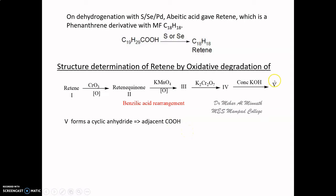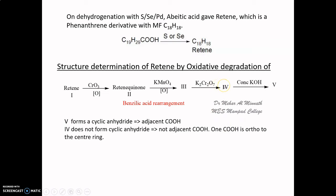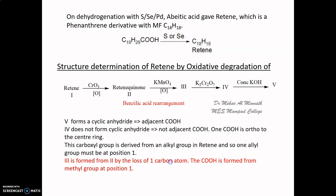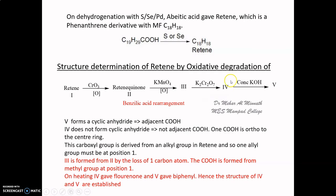Compound 5 formed a cyclic anhydride, meaning it has two adjacent carboxyl groups. Compound 4 does not form a cyclic anhydride, so its two COOH groups are not adjacent. One COOH was found to be ortho to the center ring, derived from an alkyl group in retene, so one alkyl group must be at position 1. Compound 3 is formed from compound 2 by loss of one carbon atom, so the COOH must have come from the methyl group at position 1.